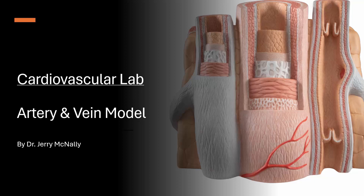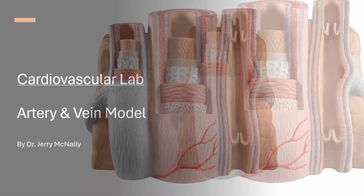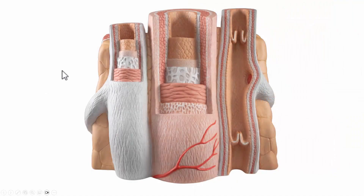In this cardiovascular lab we're going to look at the artery and vein model made by 3b Scientific. As you take a look at this model, we have two veins — a vein on this side and then we've opened up a vein right here to expose the valves. And in the center we have an artery.